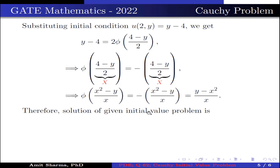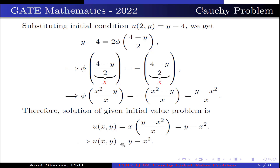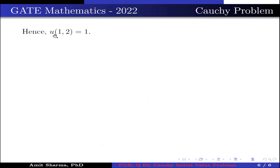Therefore the solution of the given initial value problem is u = x·(y − x²)/x, which simplifies to u = y − x². This implies the value of u(1, 2) = 2 − 1 = 1. Hence the value of u(1, 2) is equal to 1.